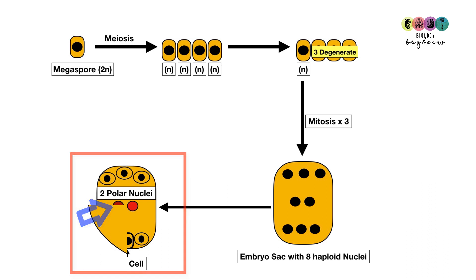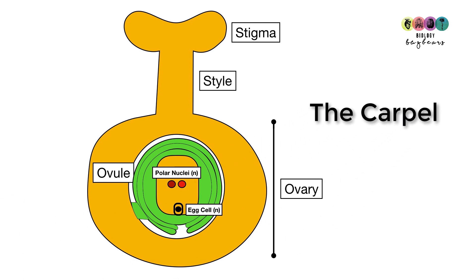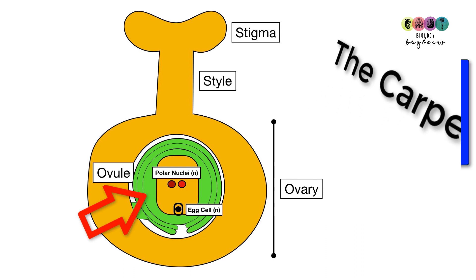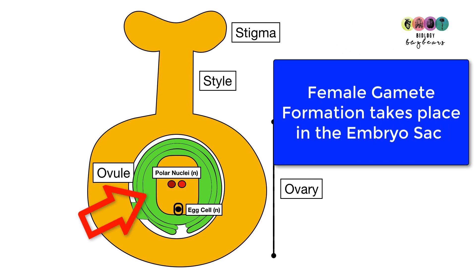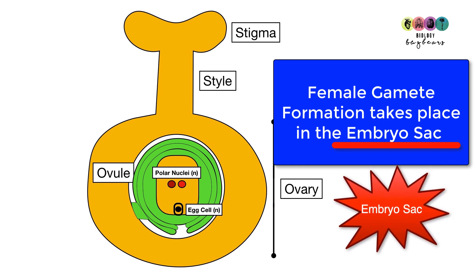At the end of the whole process, here is the carpel — the female part of the flower — made up of the stigma, the style, and the ovary. We're looking inside the carpel, particularly inside the ovule. It was a particular structure called the embryo sac where female gamete formation takes place, so it's really important that you can state that specifically.